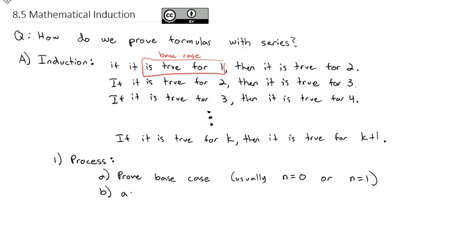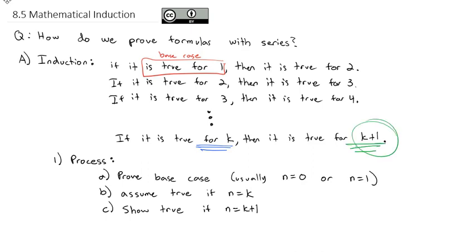If the base case is true, we're going to assume it's true if n equals k. If it's true for k, what we're going to show then is that it is also true if n equals k plus 1. We've gotten the sequence started: 1 is the first k, then 2 works, then 3 works, then 4 works, then 5 works — they all work from there on out. We prove the base case to get the whole thing started, then assume it's true for one case to show it works for the next.